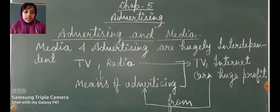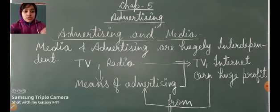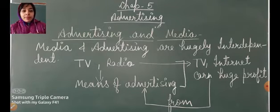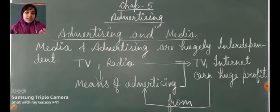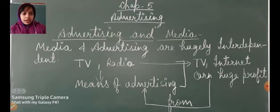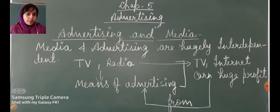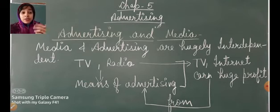Advertising and media are hugely interdependent — they both depend on each other. TV and radio are important means of advertisement. Advertisements for products like luxury shoes, soaps, perfumes, and clothes are shown to viewers and audiences. Through newspapers you will see a lot of advertisements — like Wildcraft shoes and masks. TV and the internet also bring huge profit from means of advertisement.